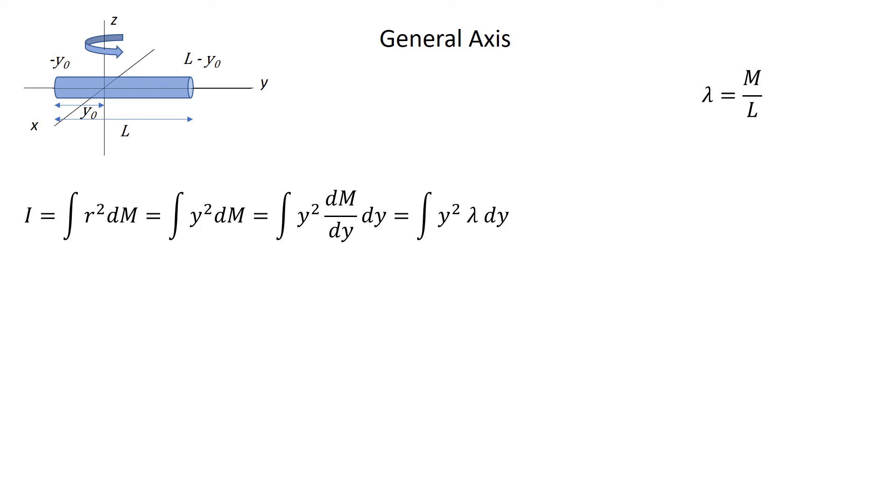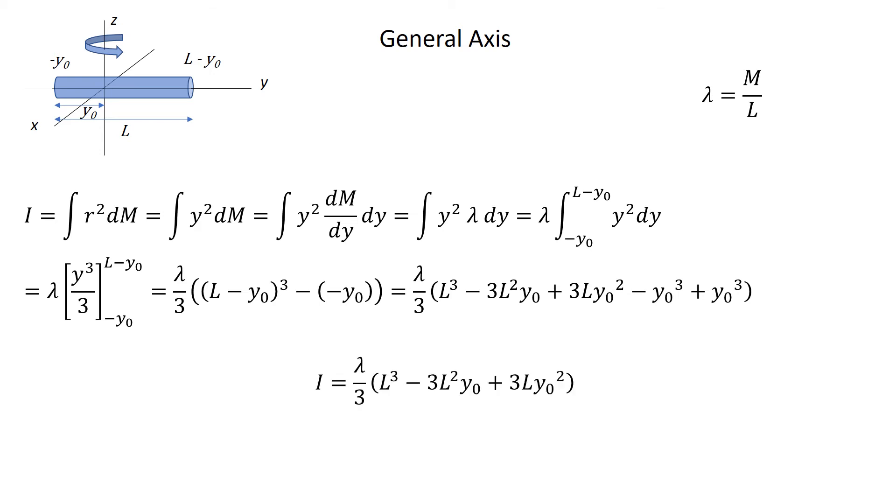After this substitution is made, where lambda is a constant, I can actually perform this integral. I'm integrating from negative y0 to L minus y0, which are the bounds of the rod as seen in the image. Performing this integral we can integrate and evaluate from the bounds, plug them in, and expand out the cube term. We get a pretty large number of terms here that can be slightly condensed, but we end up with the general form of the moment of inertia of a rod rotating about some axis through its side being lambda over 3 times L cubed minus 3L squared y0 plus 3Ly0 squared.